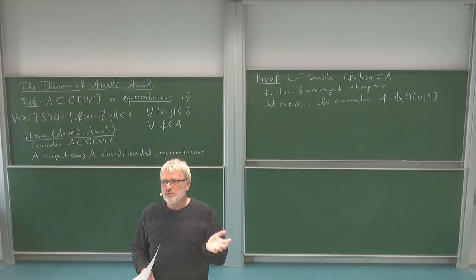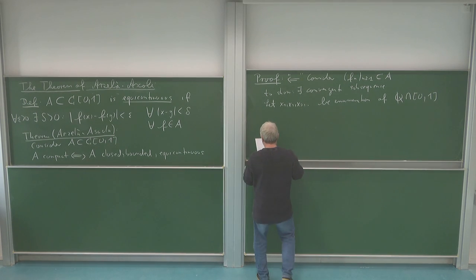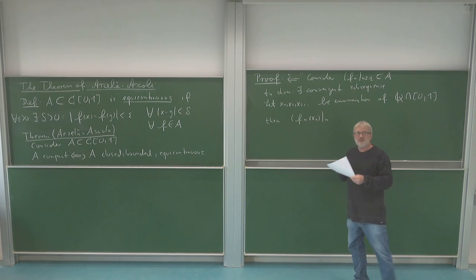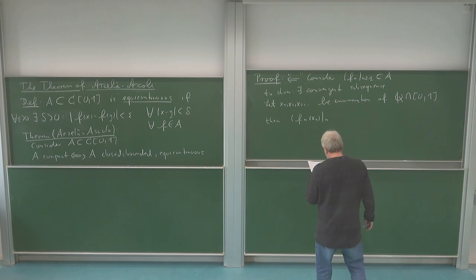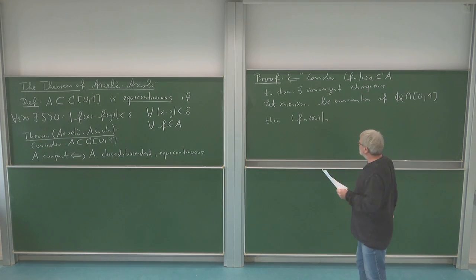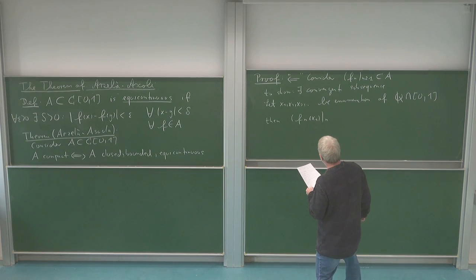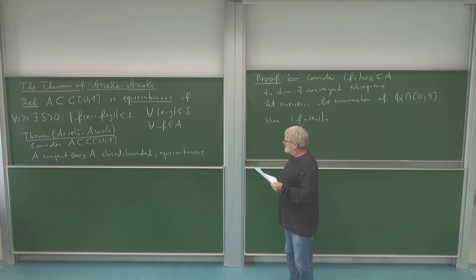Now I want to find a limit of my function sequence — or a subsequence — at those rational numbers, one after another, in the same way as you prove Heine-Borel. First, look at the first component and find a subsequence which is okay there. So we start with x₁: consider the sequence of my functions applied to x₁, i.e., f_n(x₁). This gives a sequence of numbers in ℝ.